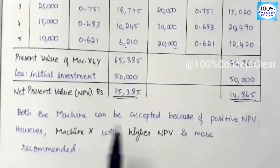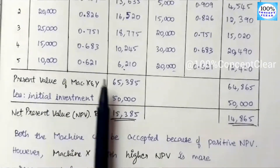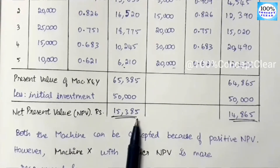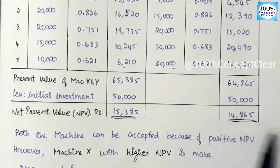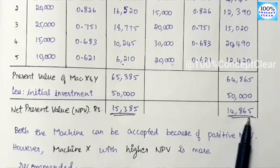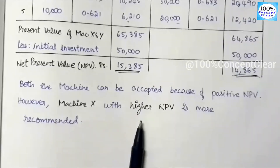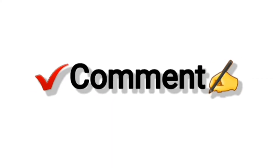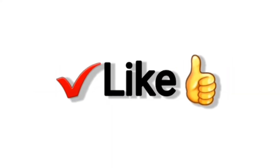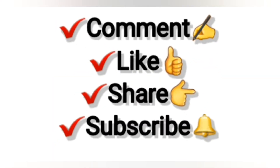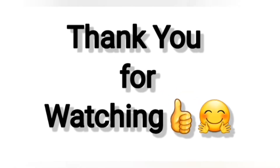The final answer: machine X NPV = 15,385 and machine Y NPV = 14,865. Decision: machine X is recommended. If you have any doubt, please like this video, share it with your friends, and subscribe to our channel. Thank you for watching. See you next time.